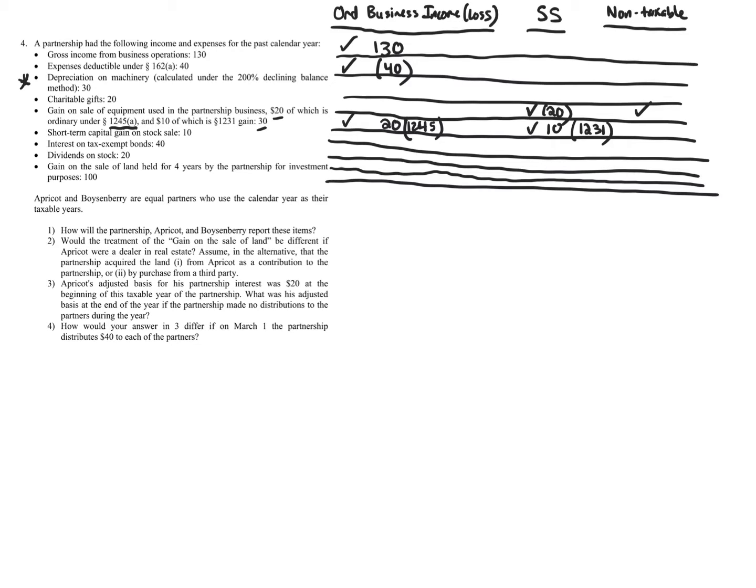Short-term capital gain on the stock sale: capital gains and capital losses are always separately stated because there are capital gain and capital loss limitations determined at the partner level.